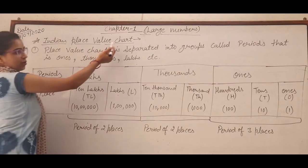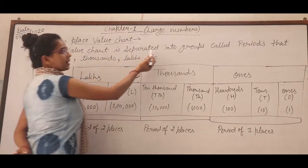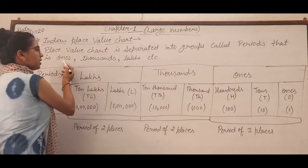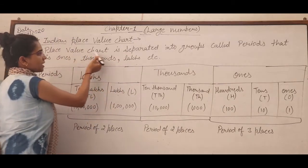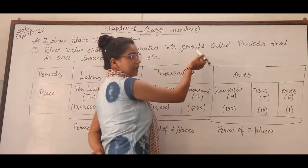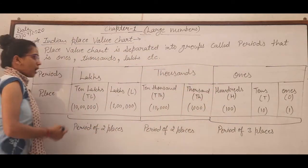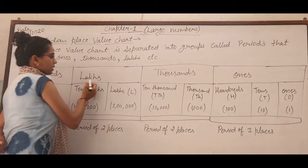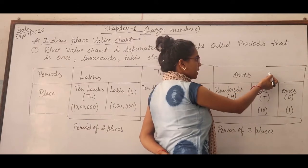Indian Place Value Chart. जब हम numbers को Periods में separate करते हैं तो उन्हें हम Periods बोलते हैं. Now we take a chart for explanation. Periods means Lags Period, Thousand Period and Once Period.